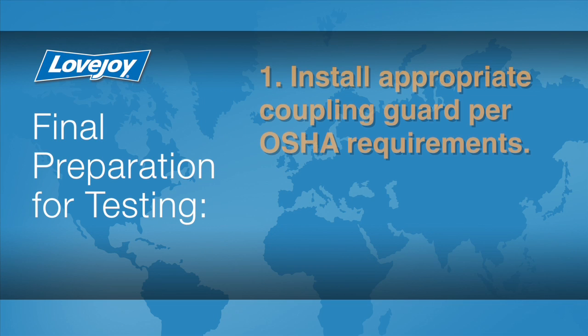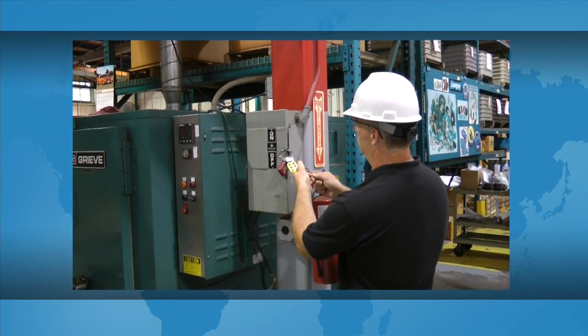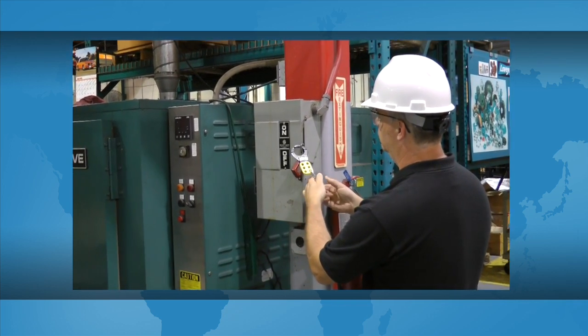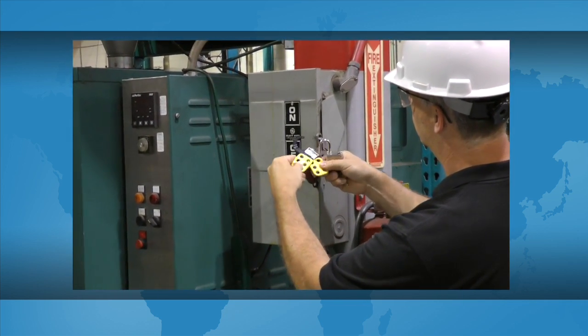Install the appropriate coupling guard per OSHA requirements and remove the lockout tagout kit from the power supply. The equipment can then be started up and tested.